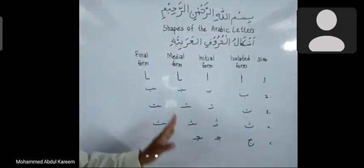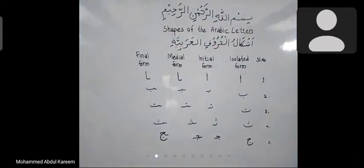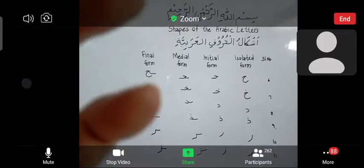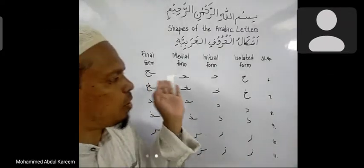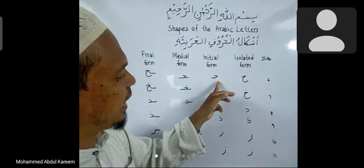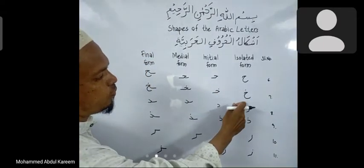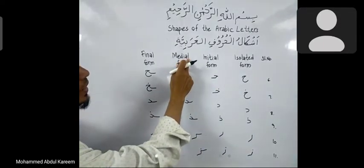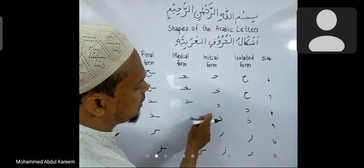This is the final form of alif, final form of ba, and final form of jim. Here you can observe ha: this ha is in isolated form, the initial form of ha is like this, the medial form is like this, and the final form is like this.